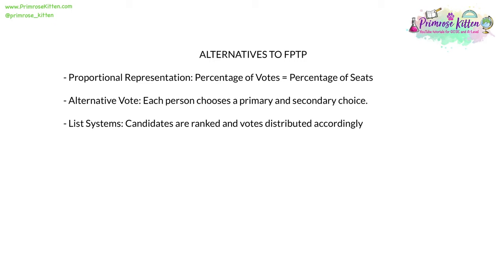There are several alternatives to first-past-the-post. In proportional representation, the percentage of the votes equals your percentage of the seats. In the alternative vote system, each person chooses a primary and secondary choice, and the votes are then distributed accordingly. In the list system, candidates are ranked, and votes are then distributed on the basis of these ranks.